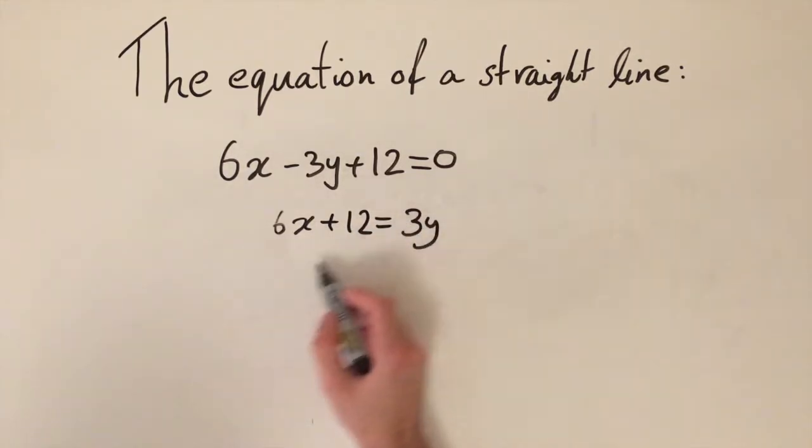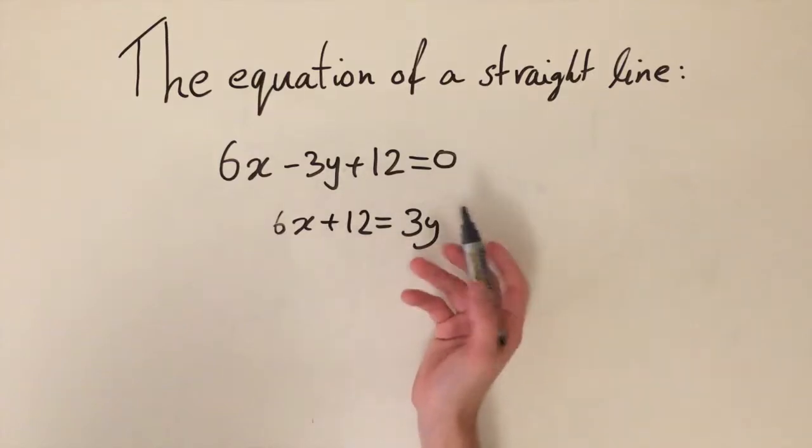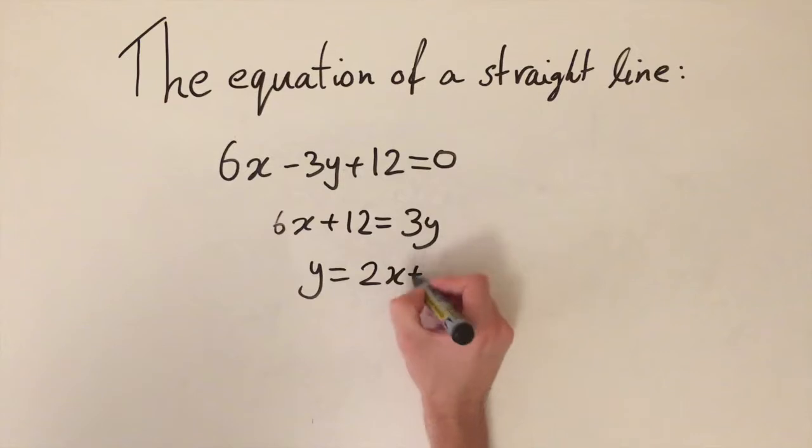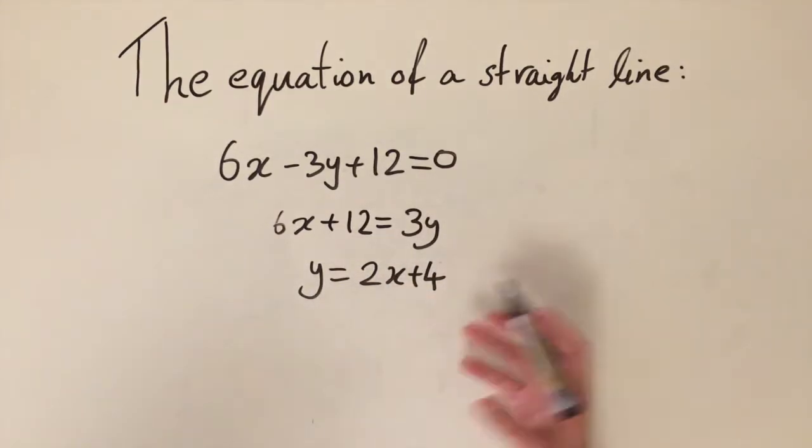And then just dividing by 3, all these numbers are multiples of three, so this simplifies quite nicely. And we get y is equal to 2x plus 4. Now this is in the y equals mx plus c form. This is what we want.